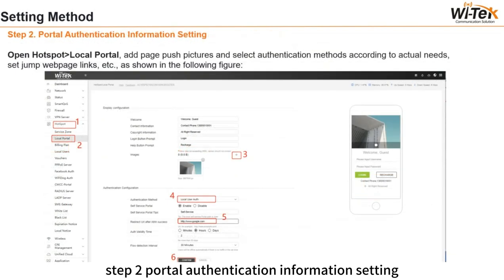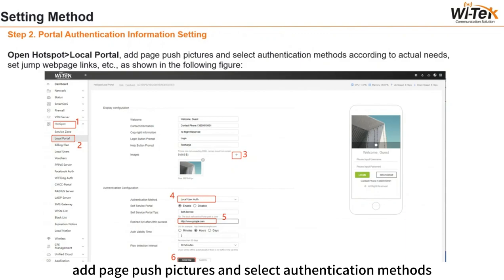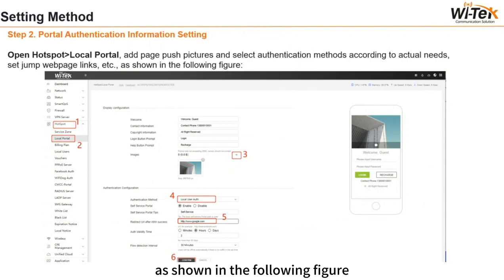Step 2: Portal Authentication Information Setting. Open Hotspot > Local Portal, click Add Page, add push pictures, and select the authentication method according to your actual needs. Set the jump webpage links, etc., as shown in the following figure.